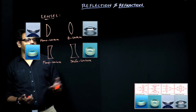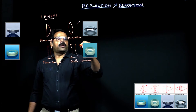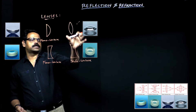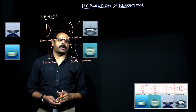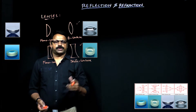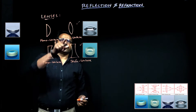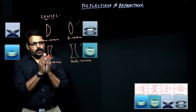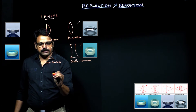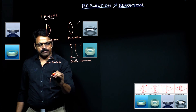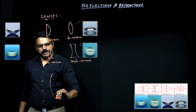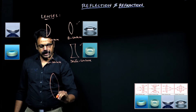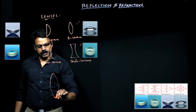Our discussion here is restricted to bi-convex and bi-concave lenses. We'll look at how images are formed due to these. In case of the convex lens, both sides are transparent, whereas in case of mirrors, one side is transparent and the other is reflective. In the convex lens, this surface is transparent as well as the other surface.